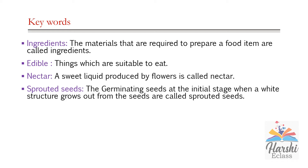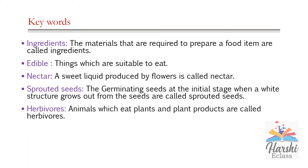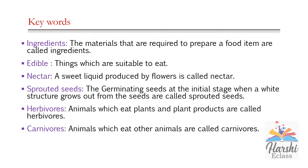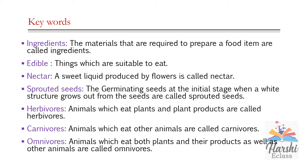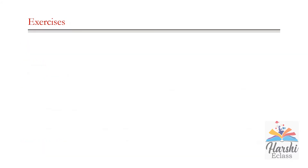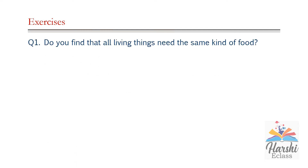We all know — in the previous class I explained you about the process of sprouting. Herbivores: animals which eat plants and plant products are called herbivores. Carnivores: the animals which eat other animals are called carnivores. Omnivores: animals which eat both plants and their products along with animals are called omnivores.